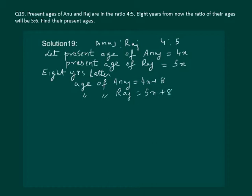And it is given that 8 years later their ages will be in the ratio 5 is to 6. That means these ages are in the ratio 5 is to 6. Let us use it. We get 4x plus 8 by 5x plus 8 will be equal to 5 by 6.